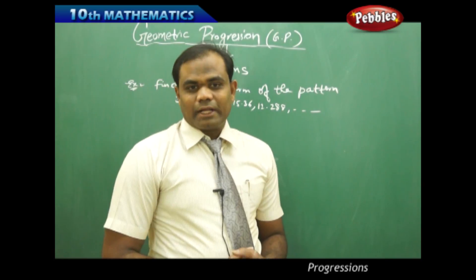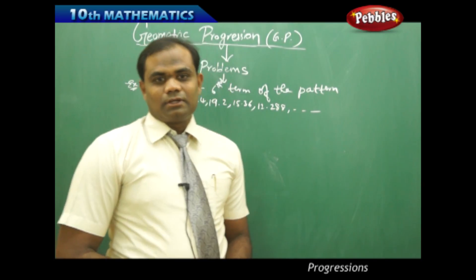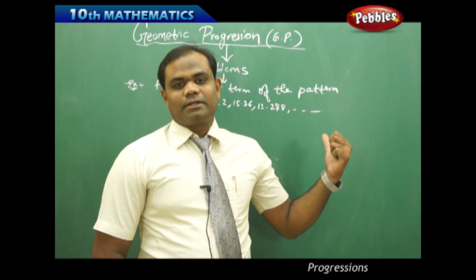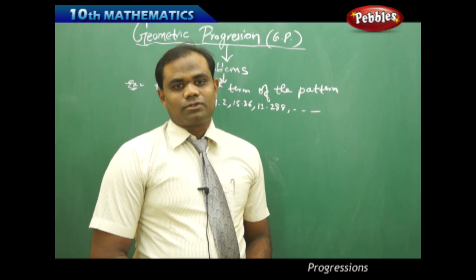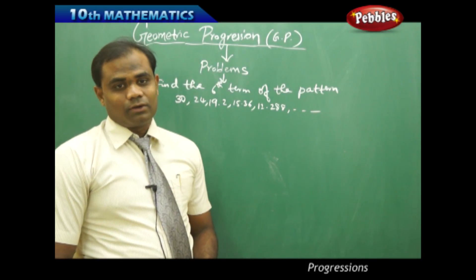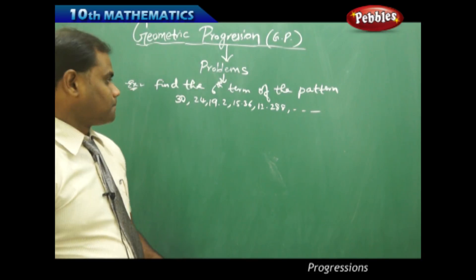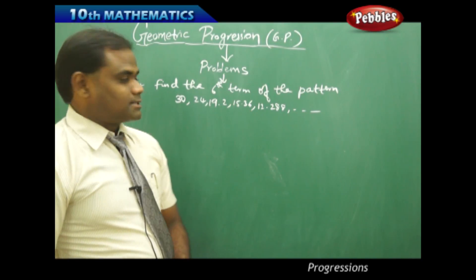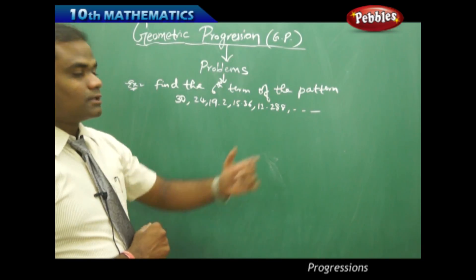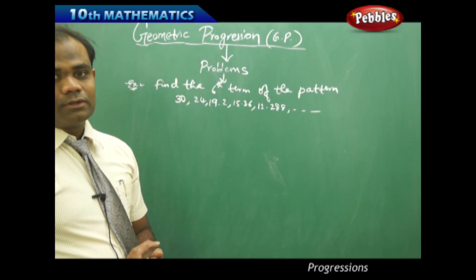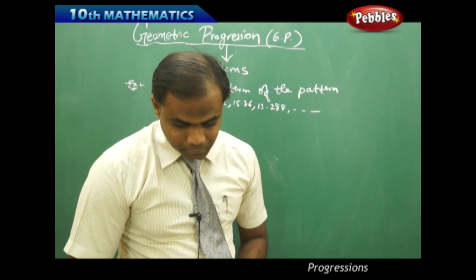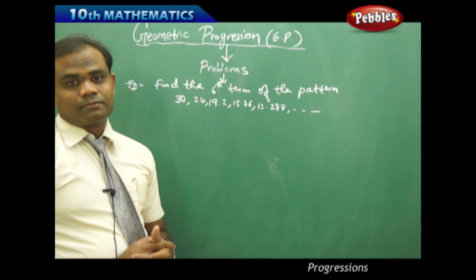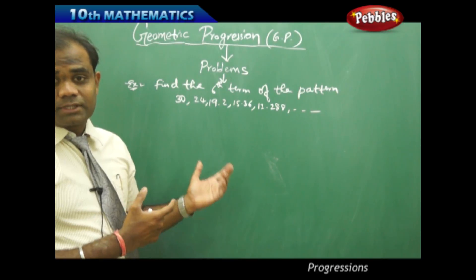Now in this case I would like to find the sixth term of the given pattern, but initially identifying the pattern is very important. So let me see if this is an arithmetic progression or a geometric progression. As I clearly see, the difference of the terms is not the same, so therefore this cannot be an arithmetic progression. Now let me start with the geometric progression.